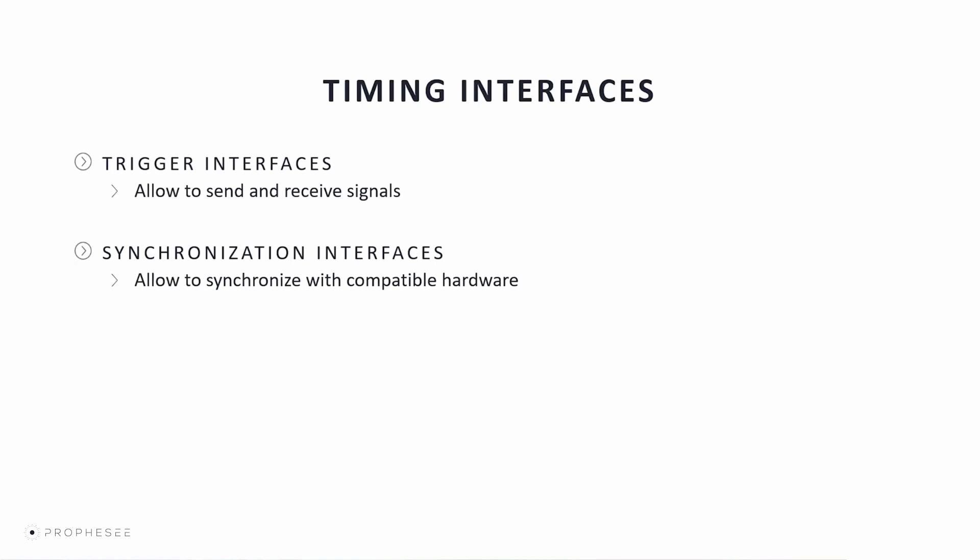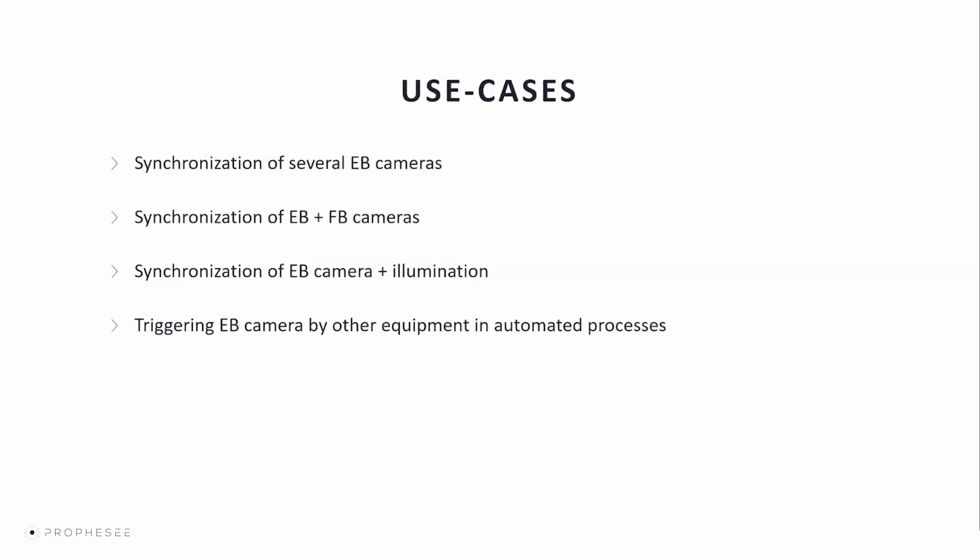Hi, and thank you for choosing Prophecy. In this video, we will learn about the trigger and synchronization interfaces available on Prophecy EVKs. Prophecy EVKs provide timing interfaces allowing you to send and receive trigger signals and also synchronize with other compatible hardware. Possible examples of use cases are synchronization of several event-based cameras, synchronization of event-based and frame-based cameras, synchronization of event-based cameras plus illumination like a signal from a light source, a frame-based camera flash strobe, and triggering an event-based camera by other equipment in automated processes like start and stop of welding.